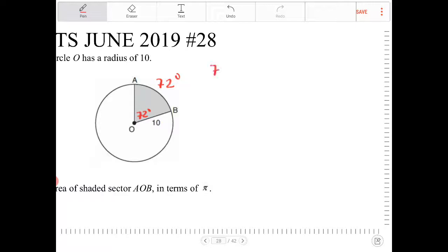So 72 degrees is to 360 degrees and that's going to be the proportion that the shaded region is compared to the rest of the circle.